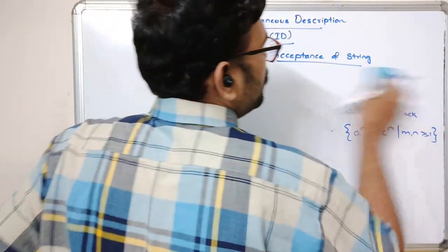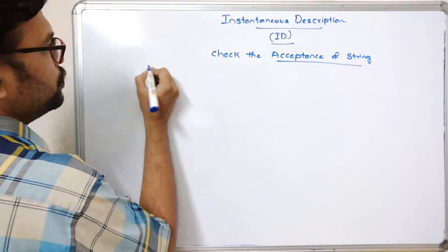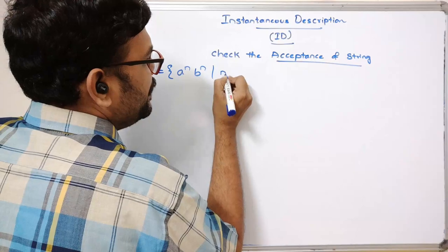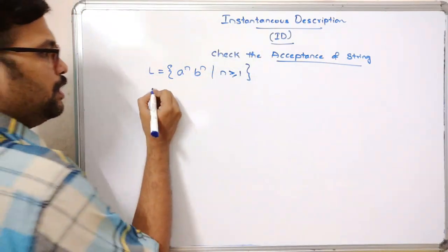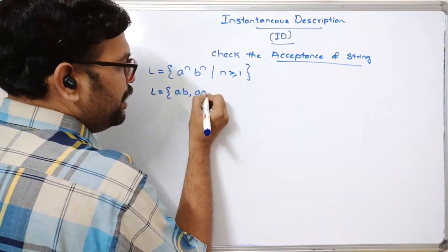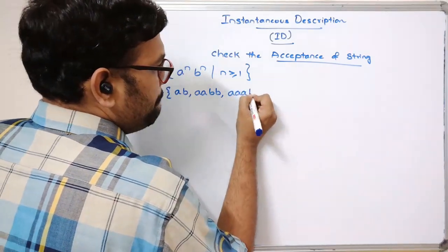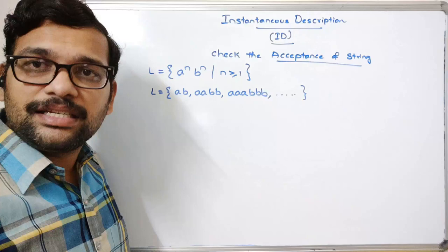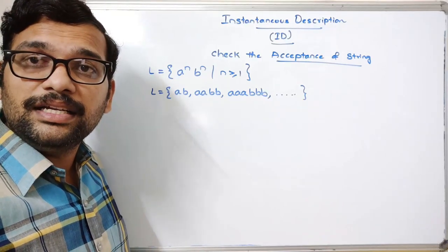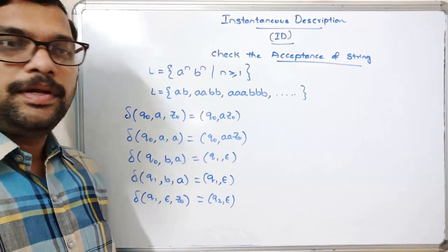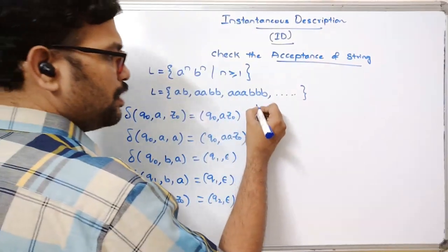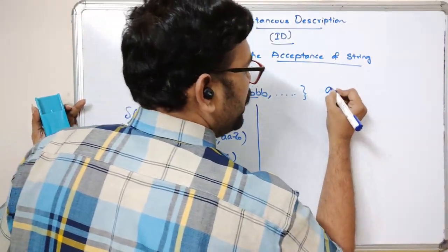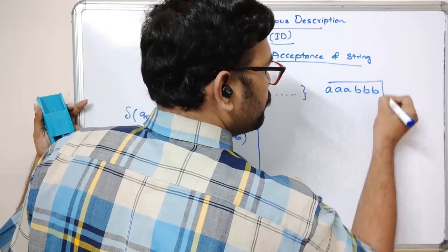Let us start with L = a^n b^n, n ≥ 1. The strings are: ab, aabb, aaabbb, and so on. We write down the transition functions for this language and then check the ID. We will take the string aaabbb and check whether it is accepted by using instantaneous description.